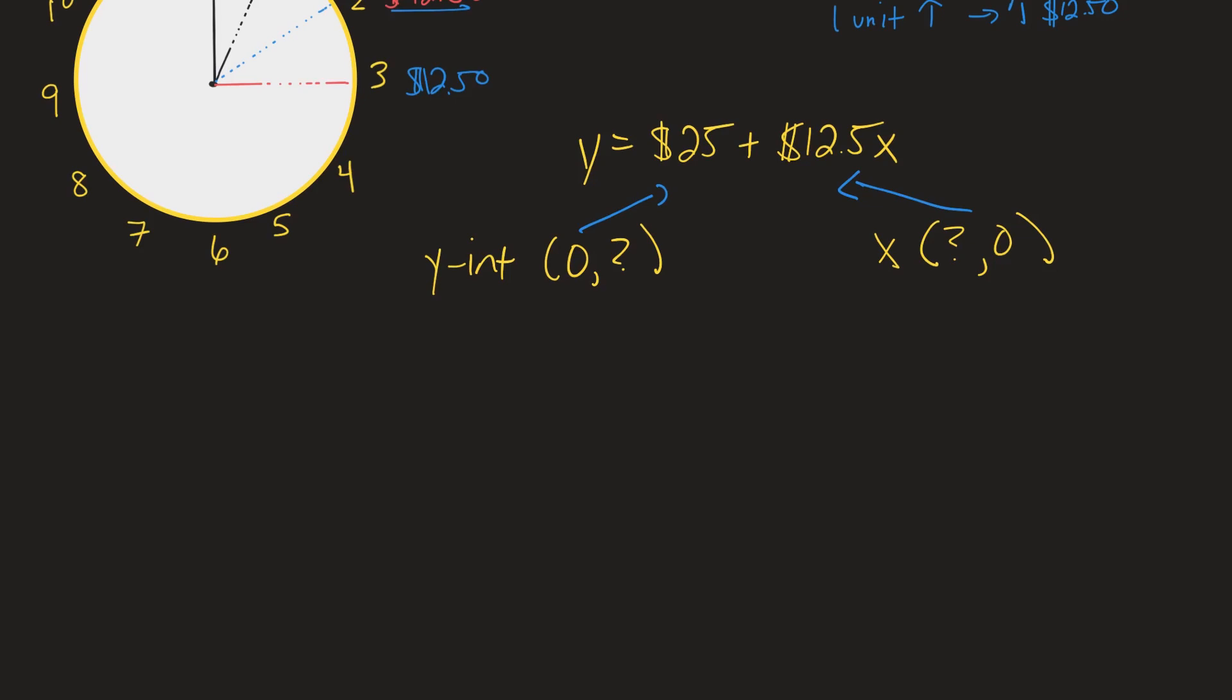Now we just substitute those in to this equation right here and we solve for the other one. So in the y-intercept case we have zero for x. So we rewrite this as y equals 25 plus 12.5 x, in this case is zero. So 12.5 times zero is zero. y equals 25. So the y-intercept is the point 0, 25.